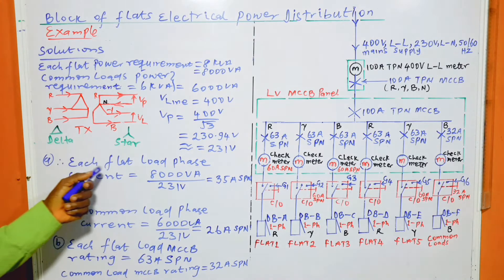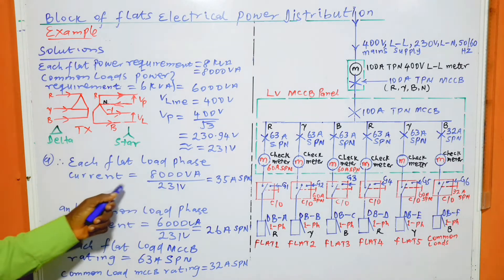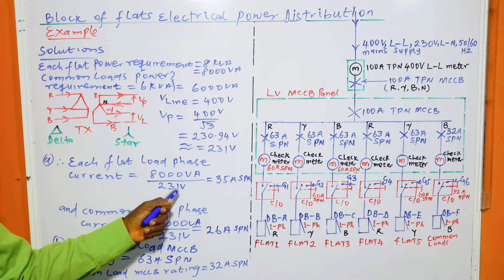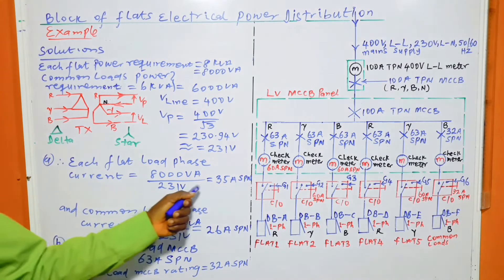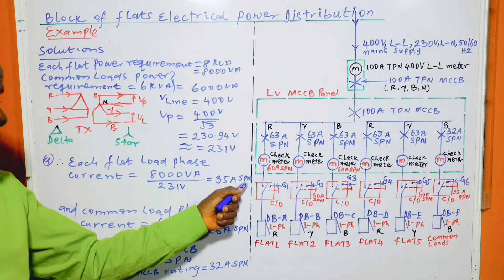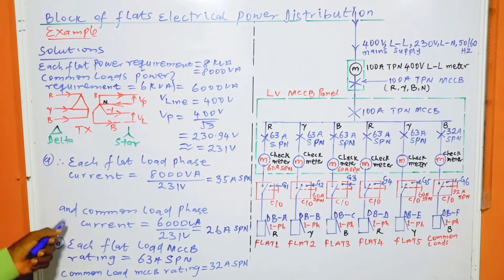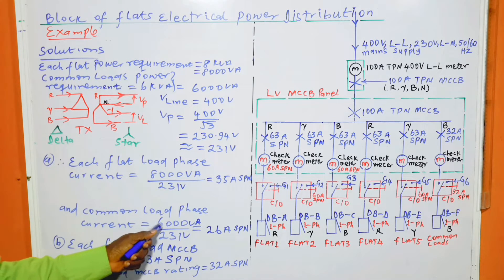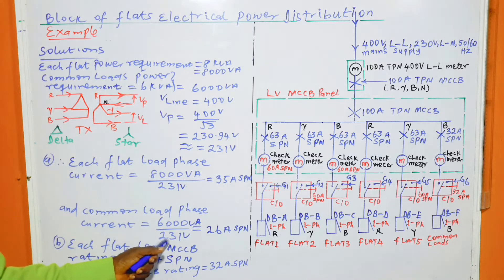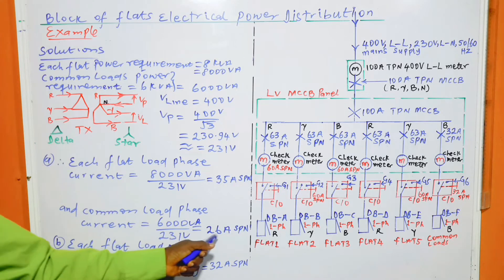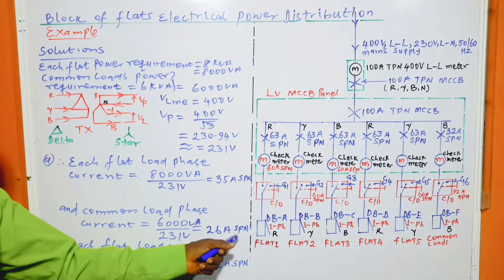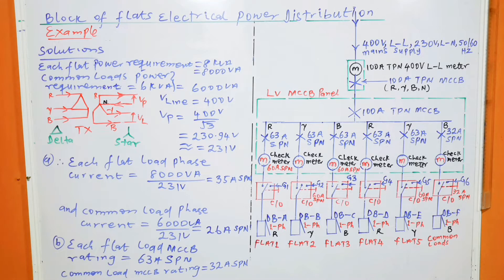Part A: each flat's load phase current is equal to 8,000 VA divided by 231 volts, which equals 35 amperes, single-phase with neutral. The common load phase current is equal to 6,000 VA divided by 231 volts, which equals 26 amperes, single-phase with neutral.